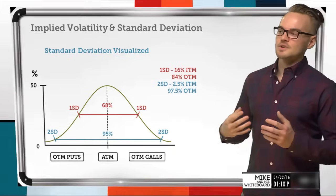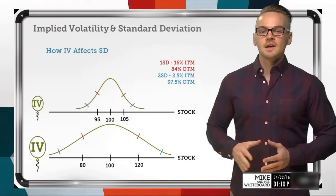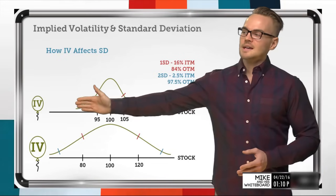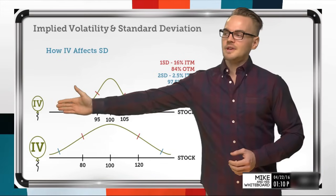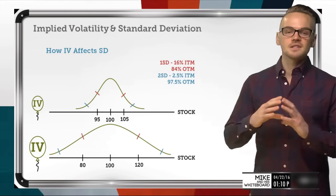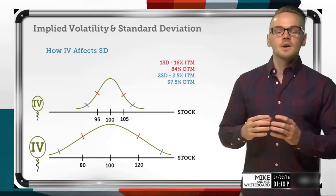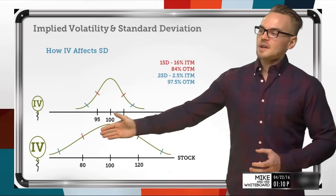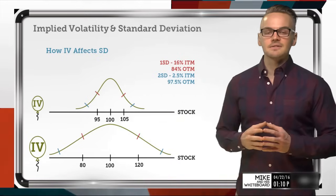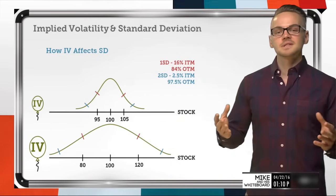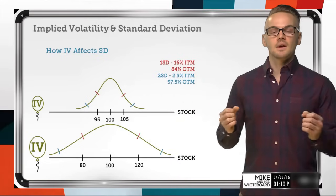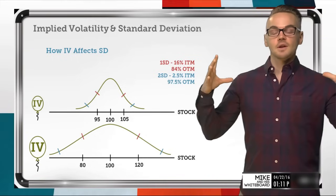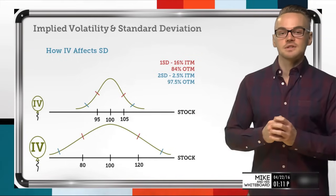On the next slide I'm going to show you two different environments. I want you to envision this first environment as our low IV environment — picture a small balloon without a lot of inflation. We're going to compare it against our high volatility environment, where we take the balloon and expand it more, because we refer to IV as expansion and contraction.